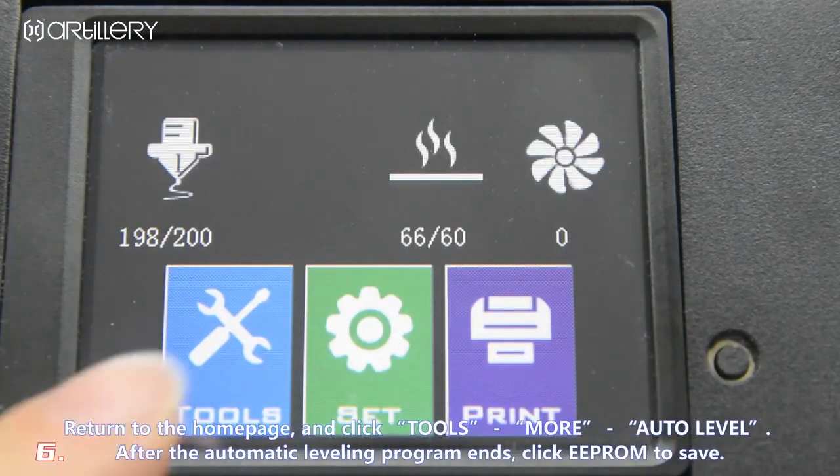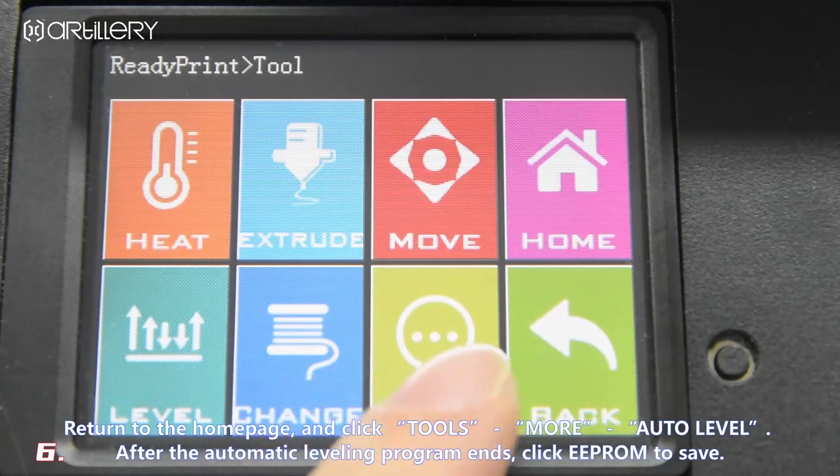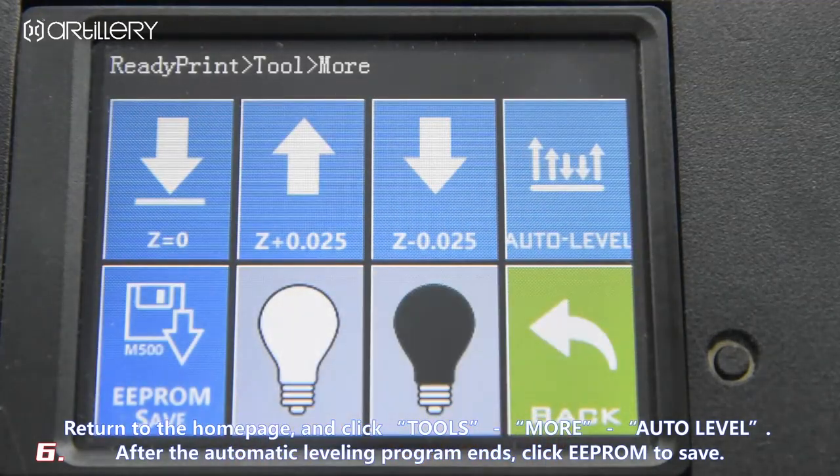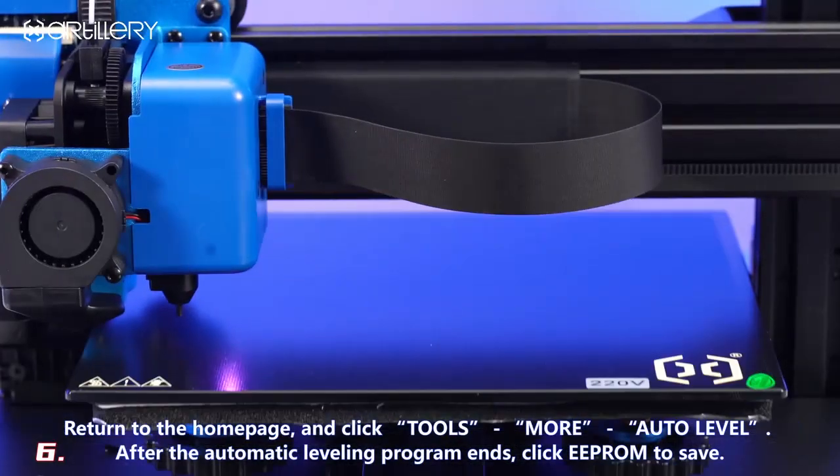Return to the home page and click, choose, more, auto level. After the automatic leveling program ends, click EPROM to save.